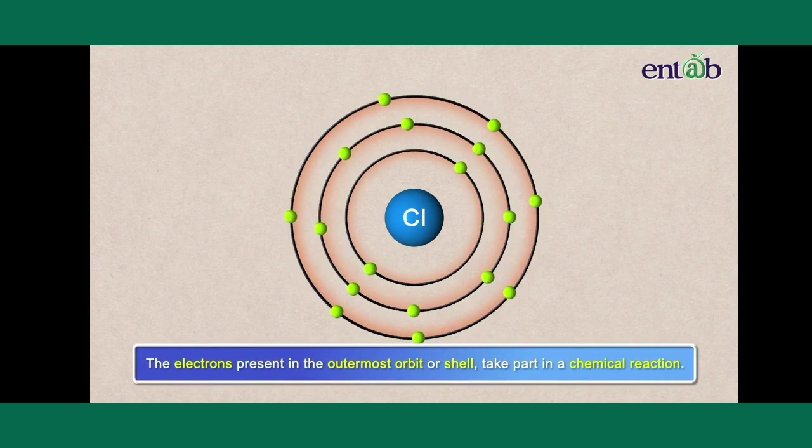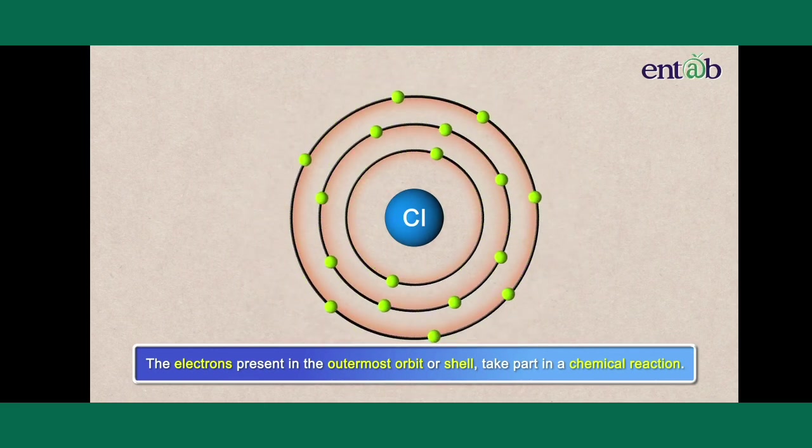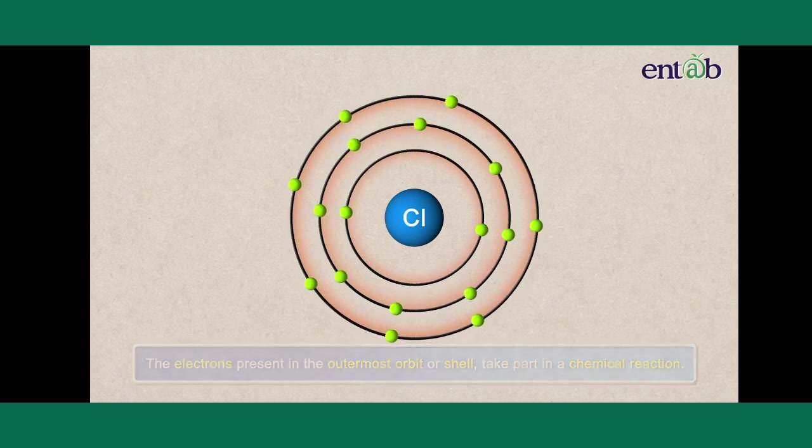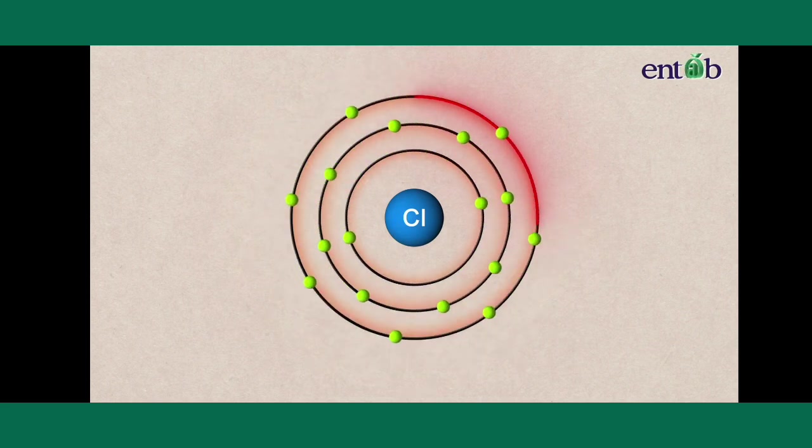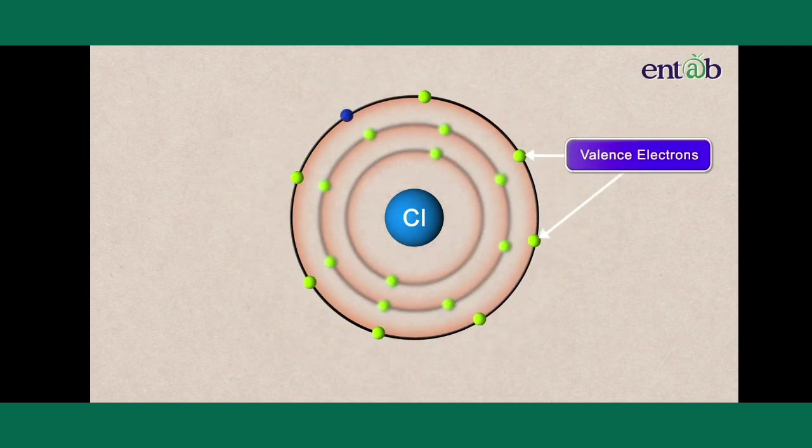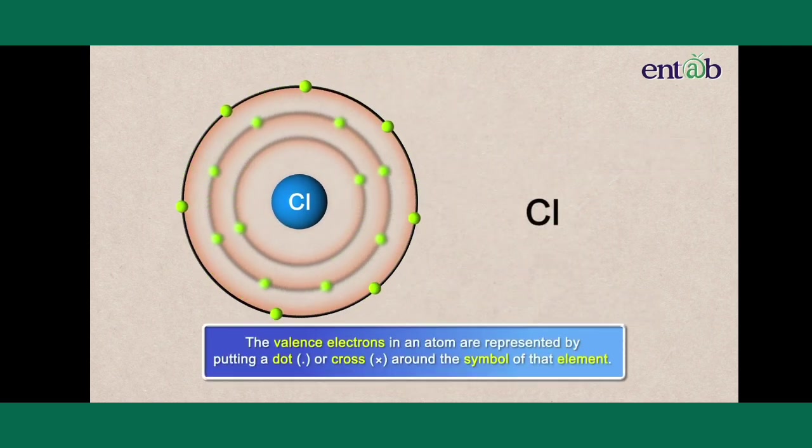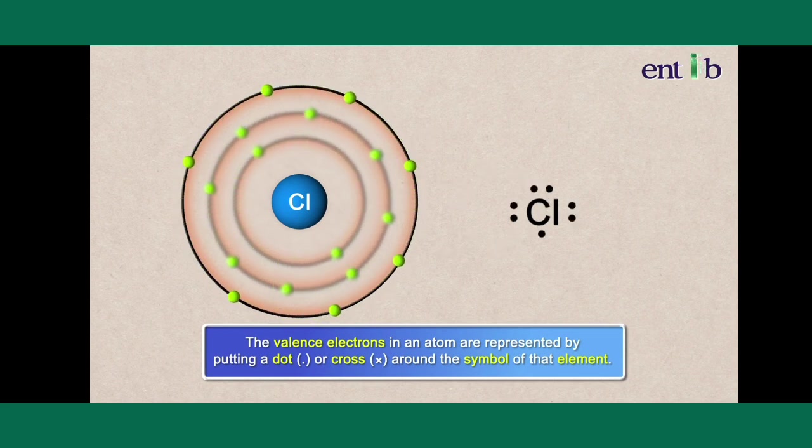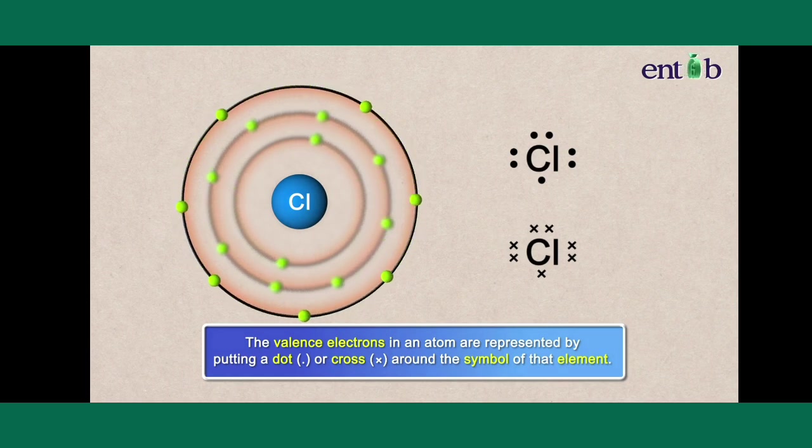The electrons present in the outermost shell are known as valence electrons and the outermost shell is known as the valence shell. The valence electrons in an atom are represented by putting a dot or a cross around the symbol of that atom for each electron.